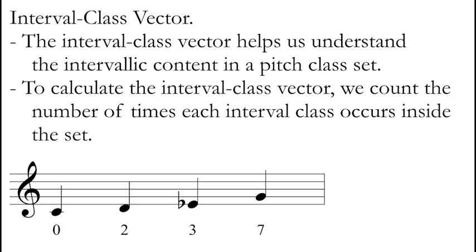Simplifying our pitch class intervals to interval classes allows us to use a new tool to look at the intervalic content in a pitch class set. That new tool is what we call the interval class vector. The interval class vector counts the number of times each interval class occurs inside a pitch class set. By simplifying pitch class intervals into interval classes, we have a smaller number of things to count, allowing us to really focus and ignore all the different inversions. It's a really useful tool in understanding what sorts of relationships occur between pitches. Let's talk about how we might find an interval class vector.